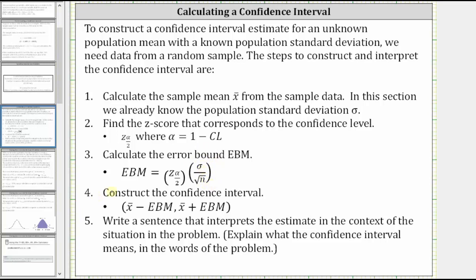Step four, we construct the confidence interval, which is x-bar minus the error bound to x-bar plus the error bound. And step five, we write a sentence that interprets the estimate in the context of the situation in the problem. Let's take a look at an example.